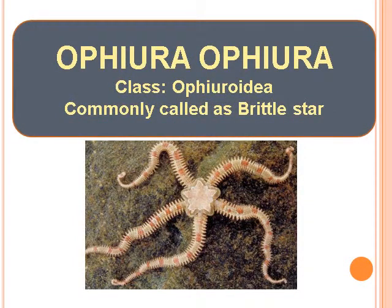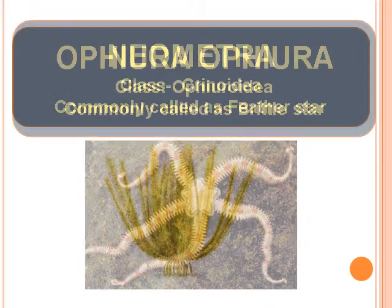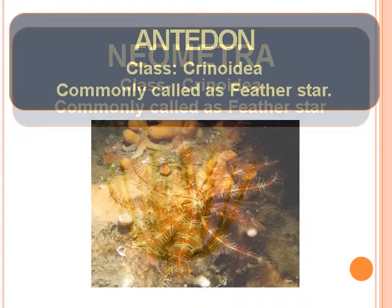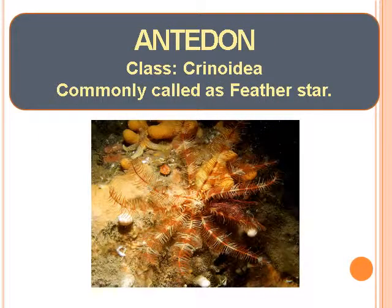Ophura, class Ophuroidea, commonly called as Brittle Star. Neometra, class Crinoidea, commonly called as Feather Star. Antidone, class Crinoidea, commonly called as Feather Star.